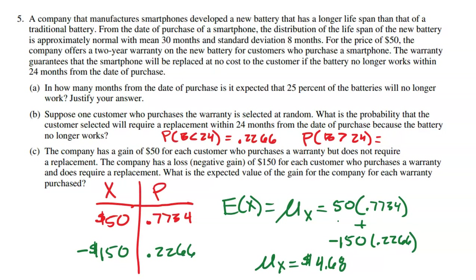In the long run, the average gain would be $4.68. The company is going to make $4.68 for every person who buys the warranty — sometimes they keep the $50, and sometimes they lose $150, but in the long run they gain $4.68. Hopefully you enjoyed the video and it made a lot of sense. It's really a question dealing with the normal model, which is a probability model for a random variable — here, how long the battery will last. Thanks for watching.